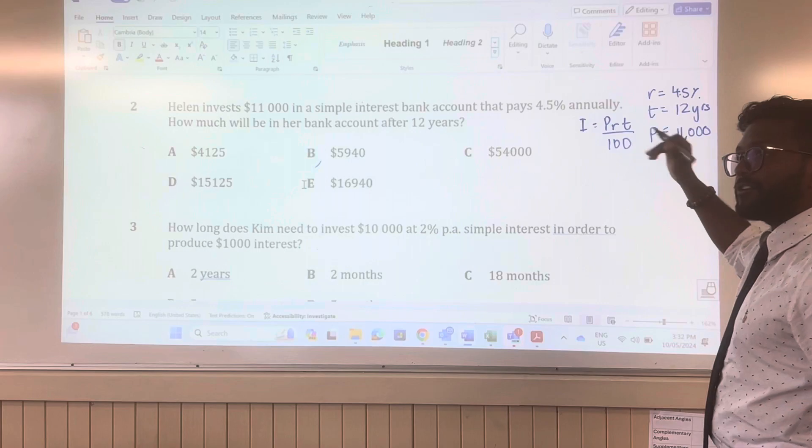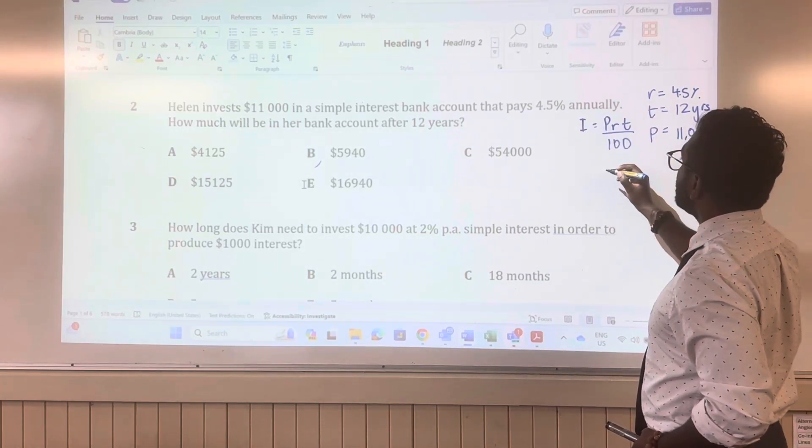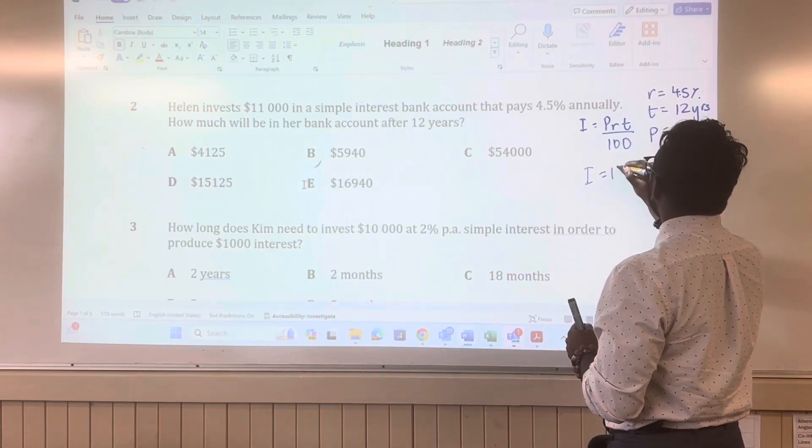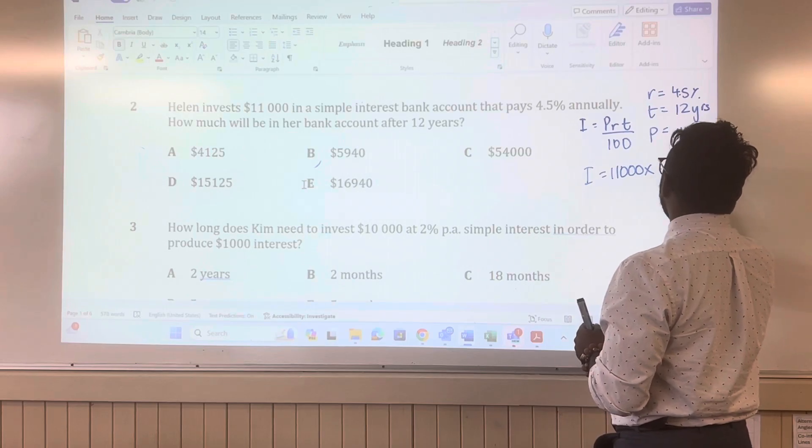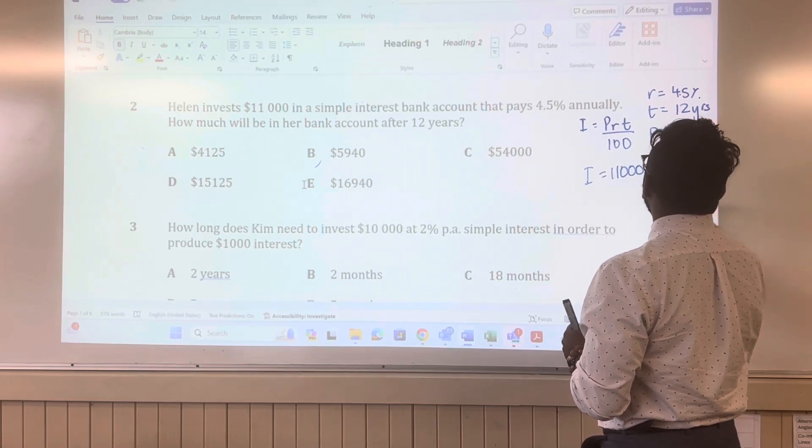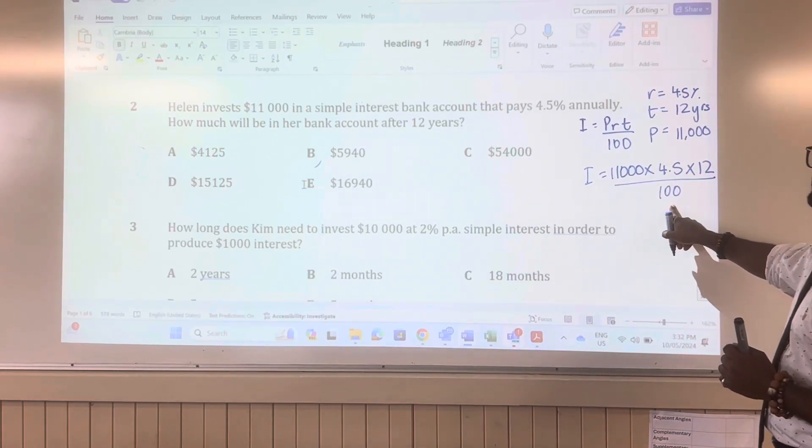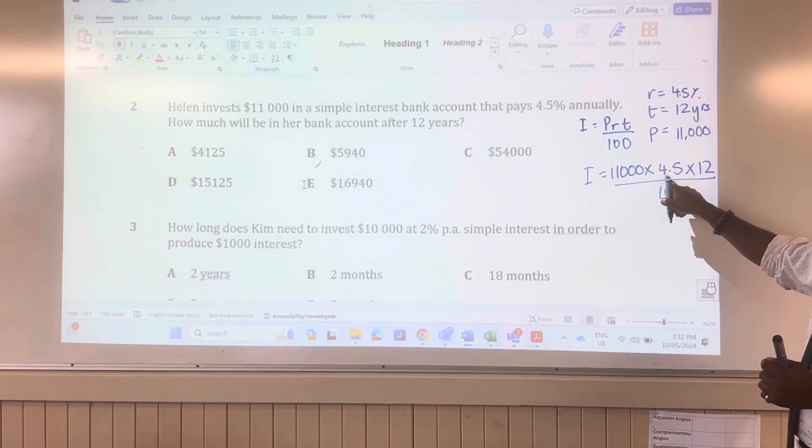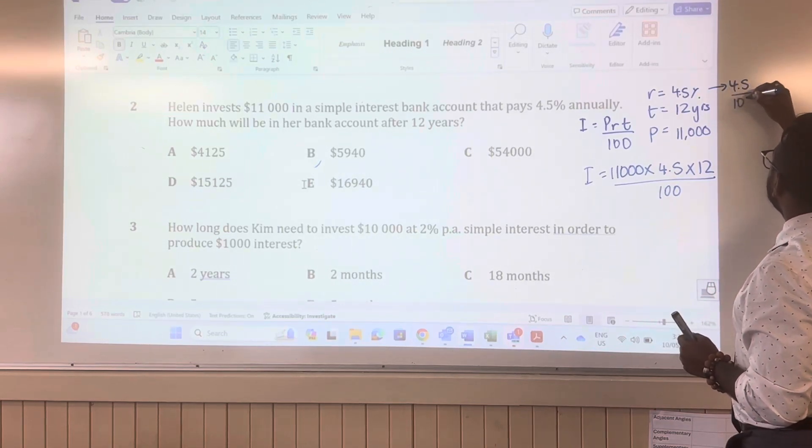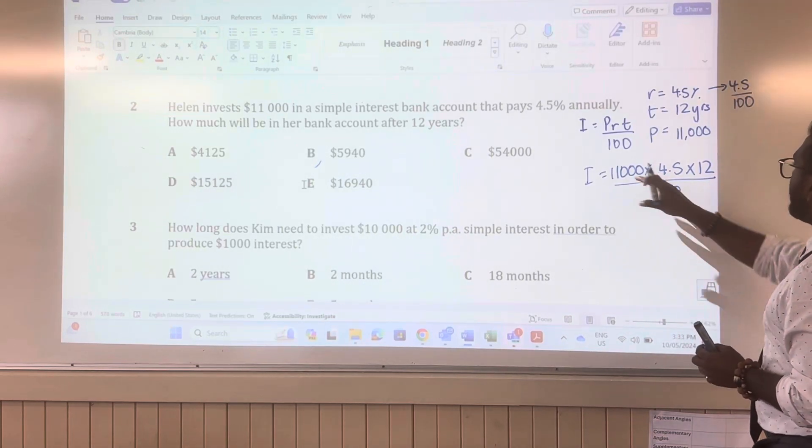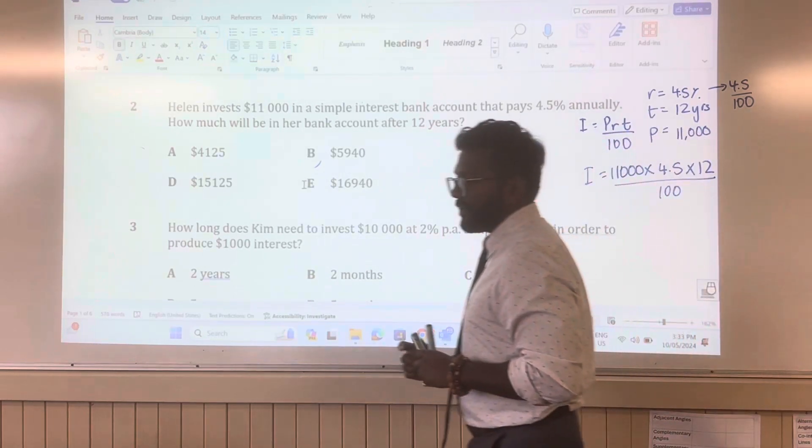Principal is how much you invest in this situation. And now we're going to substitute it into this formula. I is equal to 11,000 times 4.5 times 12, and then you divide that by 100. Why do you divide by 100? Because it's coming from the 4.5%. What's 4.5%? 4.5 divided by 100. That will give you your answer when you put that in your calculator.